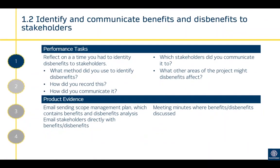Criterion 1.2 is identifying and communicating benefits and dis-benefits to stakeholders — identifying what the benefits and dis-benefits of the project are regarding stakeholders, and being able to communicate and get their input. Reflect on the time you had to identify benefits and dis-benefits to stakeholders: what method did you use to identify them, how did you record it, how did you communicate it?